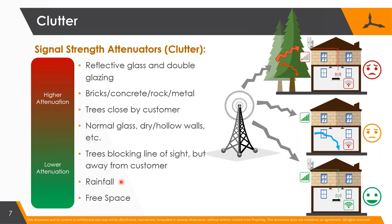A common question is whether rainfall impacts communication. Below 6 GHz, rainfall has virtually zero impact. Some people do notice some impact when trees are in the way, because water on leaves increases tree absorption - but rainfall itself is almost equivalent to free space over small distances. It becomes a significant factor at around 10 GHz, which is why satellite TV suffers when there are heavy clouds and rainfall.